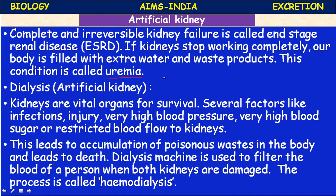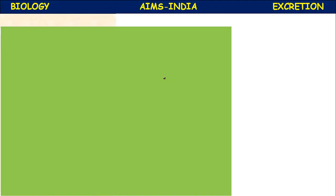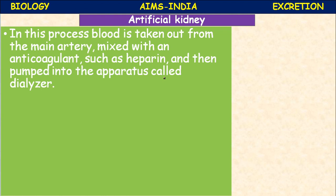The process is called hemodialysis. In this process, blood is taken out from the main artery and mixed with an anticoagulant - a substance that prevents clotting of blood. Since blood clots as soon as it is exposed outside the body, anticoagulants like heparin are added, and then the blood is pumped into the apparatus called the dialyzer.